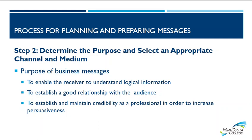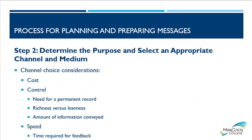Step two is to determine the purpose and select an appropriate channel or medium. What's the purpose of the business message? Is it to enable the receiver to understand logical information, to establish a good relationship with the audience, or to establish and maintain credibility as a professional in order to increase persuasiveness — for example, a LinkedIn post? Channel choice considerations include cost, control, whether a permanent record is needed, richness versus leanness, amount of information conveyed, speed, and time required for feedback. For instance, social media may generate immediate feedback versus email or voicemail.